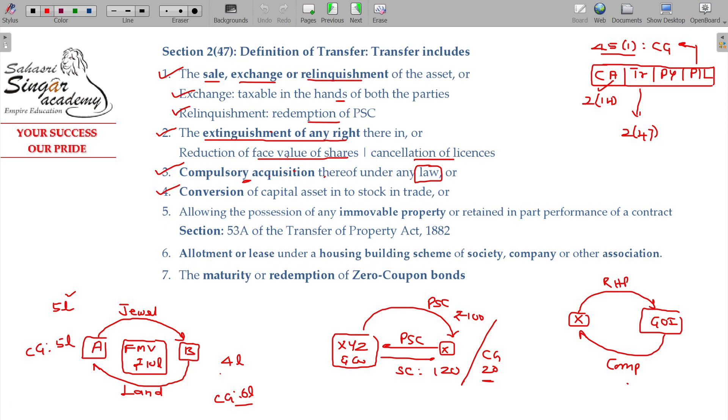So conversion of capital asset into stock in trade also falls under transfer. Automatically, on the date of conversion, the capital gains will be calculated, but tax will be payable on sale of stock. There is a separate section for compulsory acquisition under Section 45 Class 5, and for conversion under Section 45.